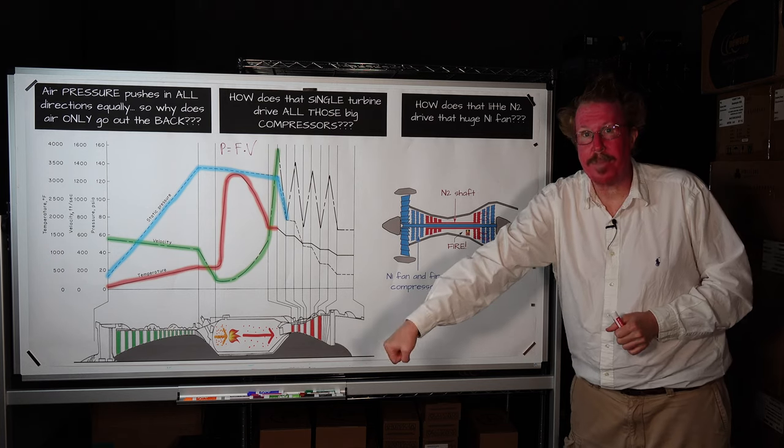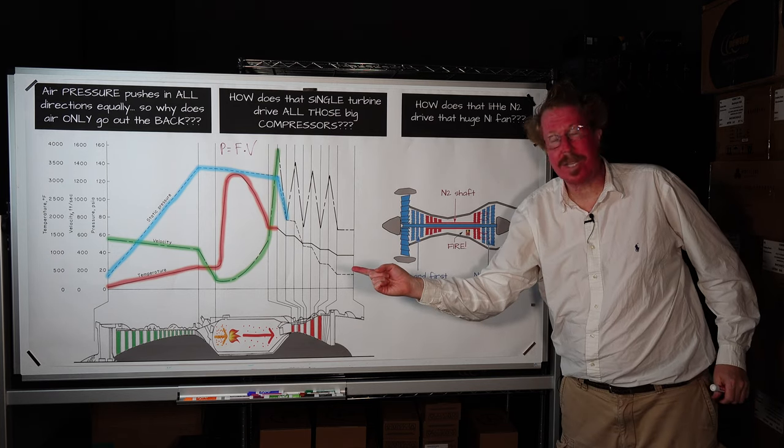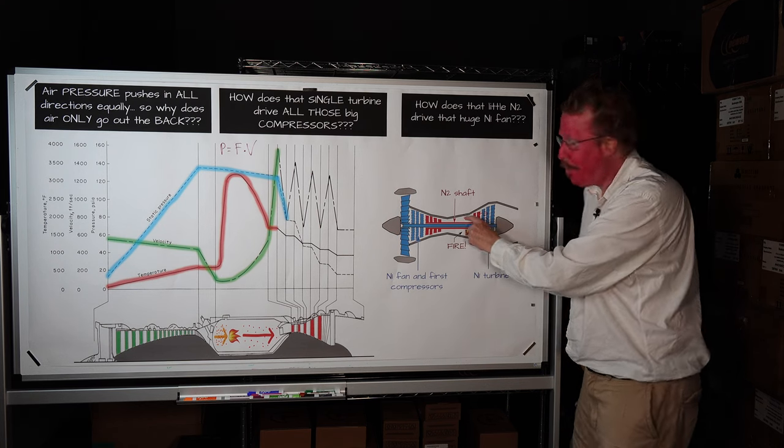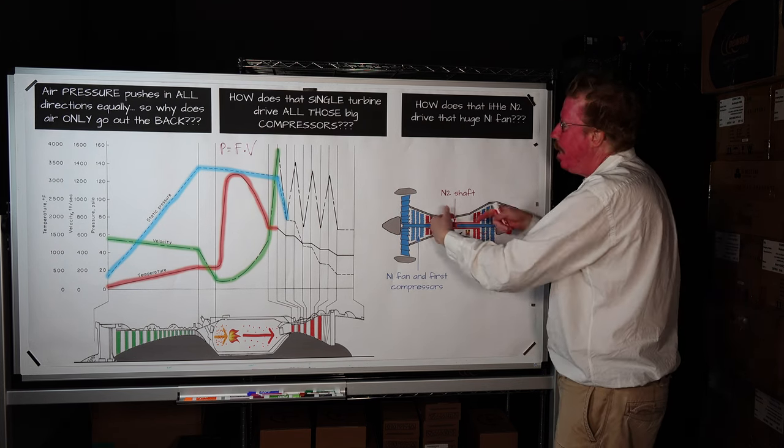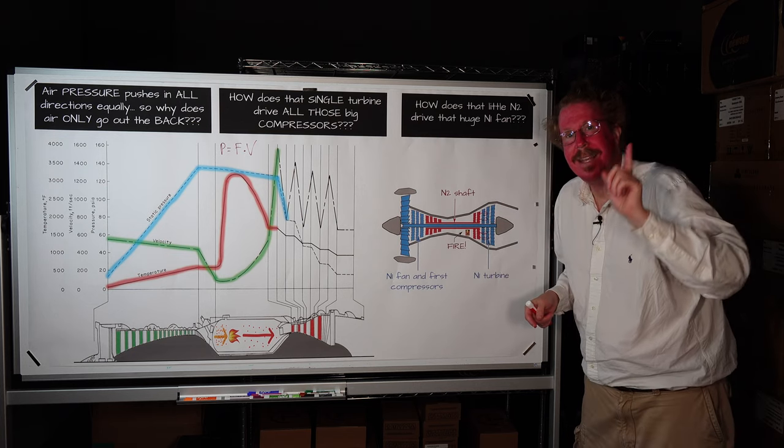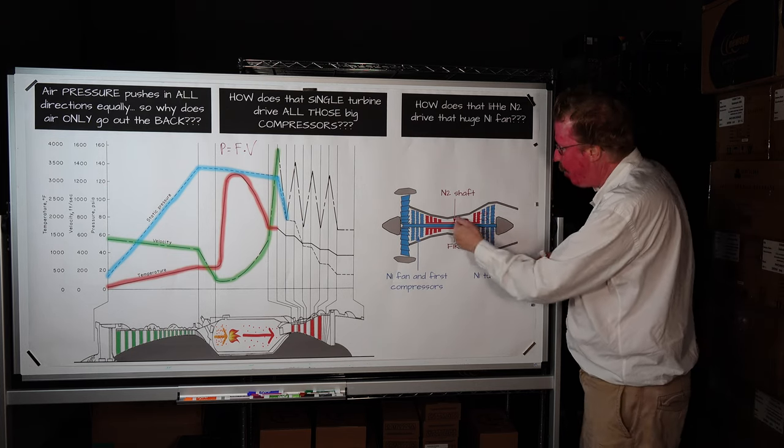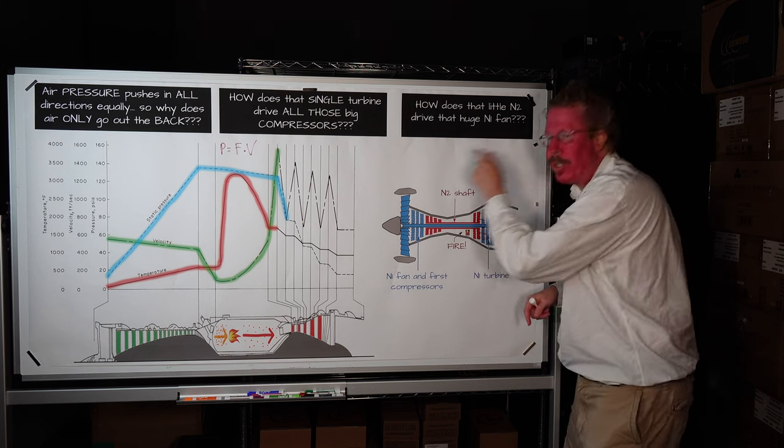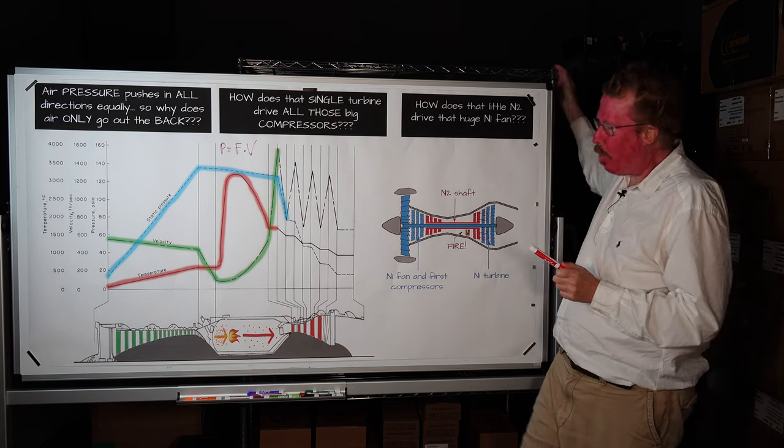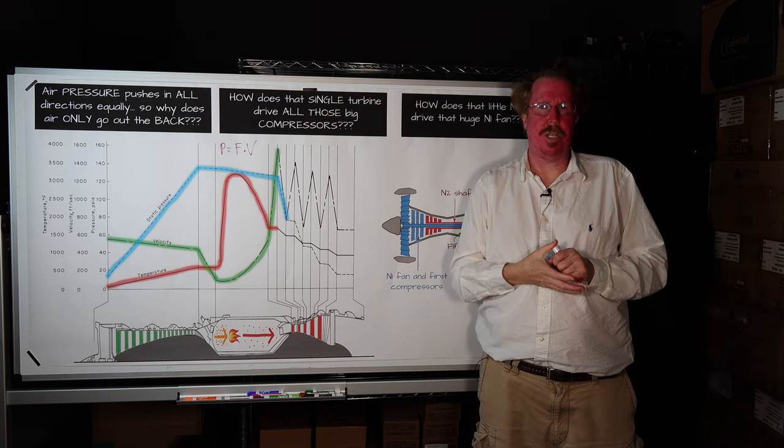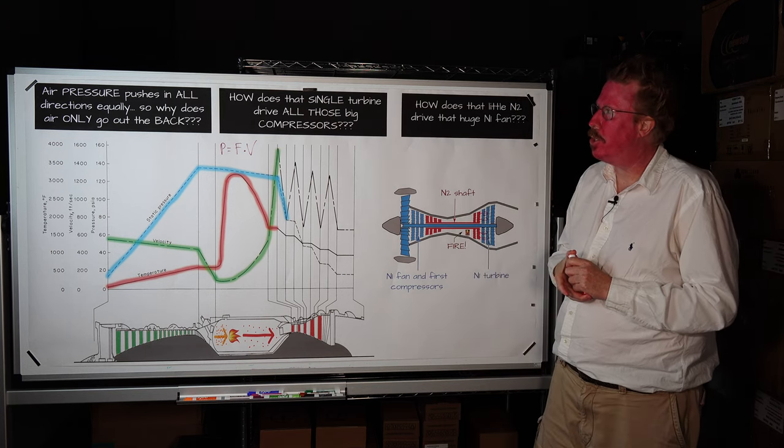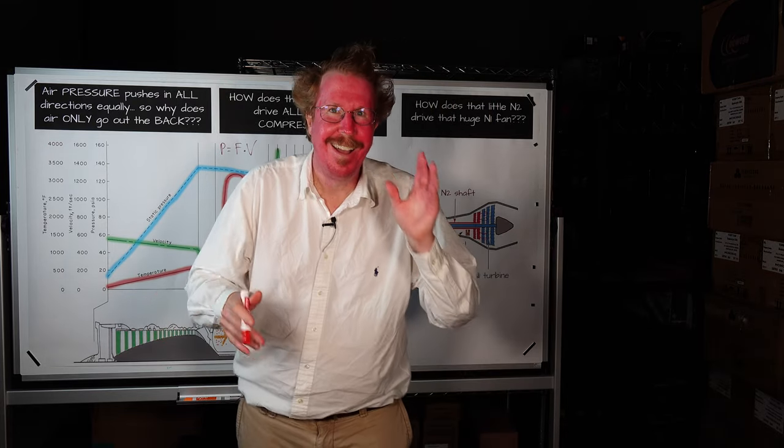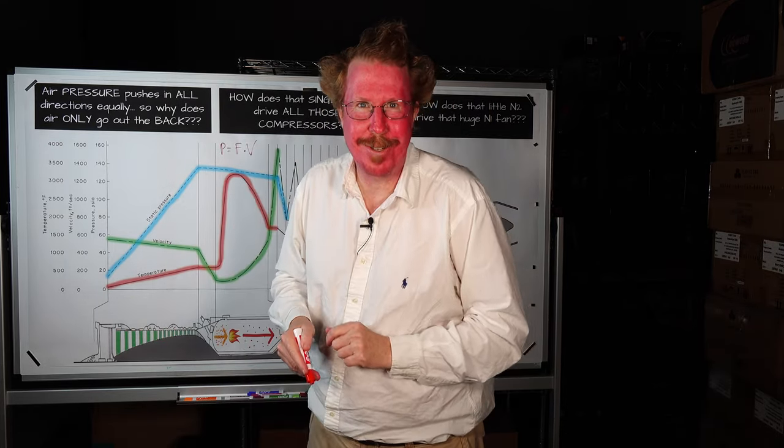And that's why when you advance power, first the temperature comes up. That's from the fuel. Then the N2 comes up. That starts spinning up the N2. Then the N1 comes up after that. The exhaust popping out of this N2, then eventually drives N1. So those are the three questions that I wanted to answer about jet engines. And despite how crazy I look right now, I think I got the answers to those questions figured out.